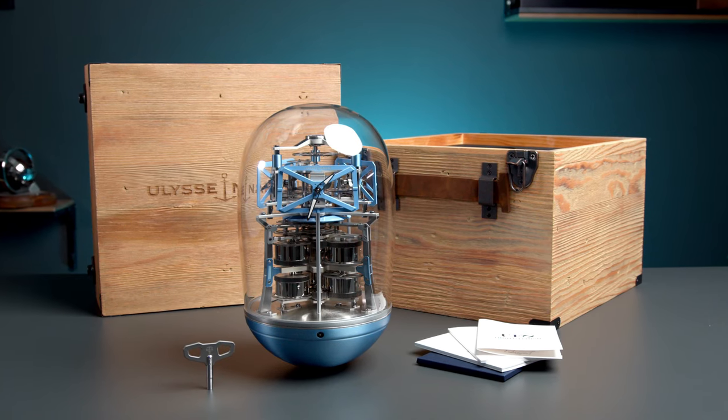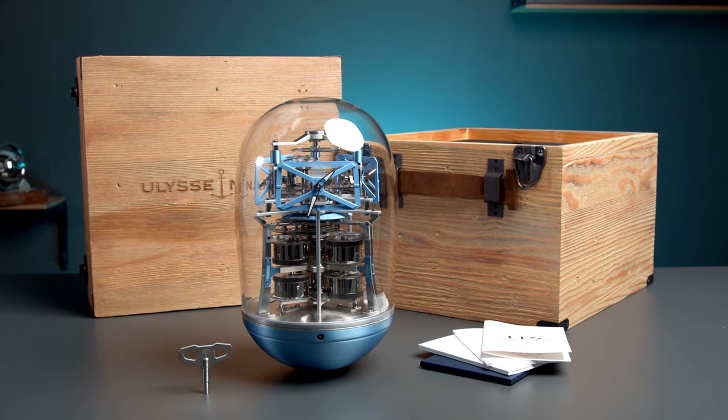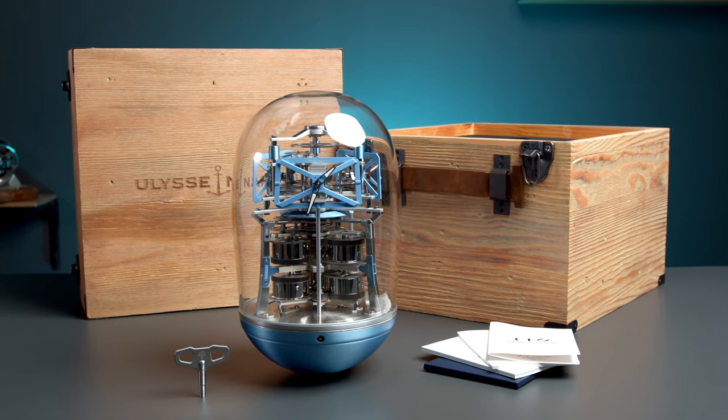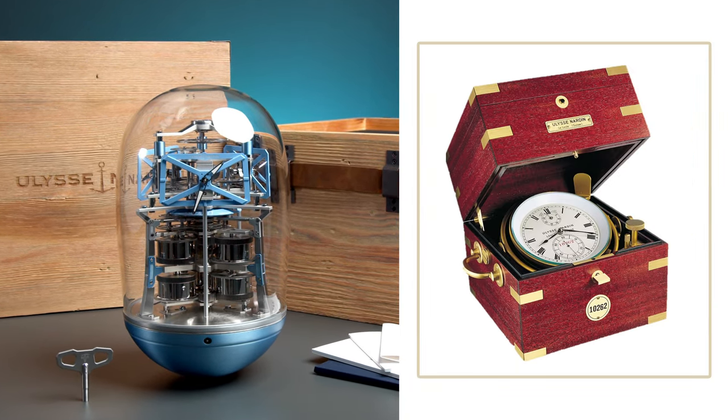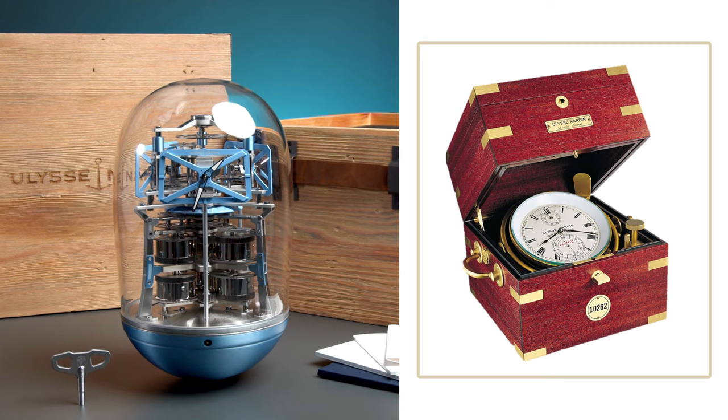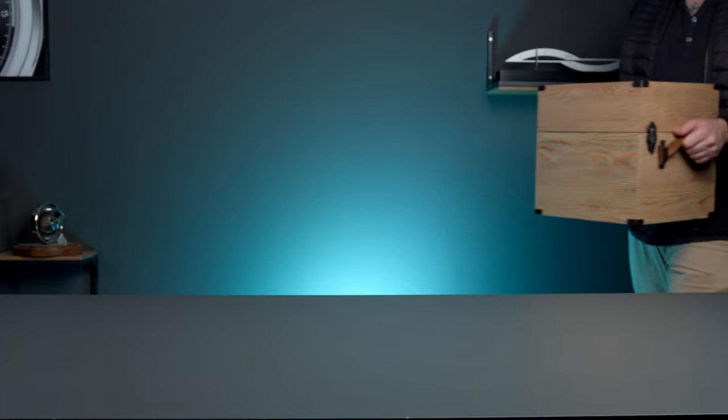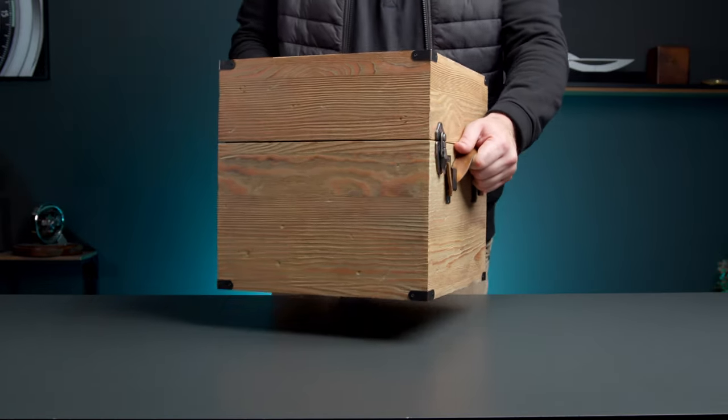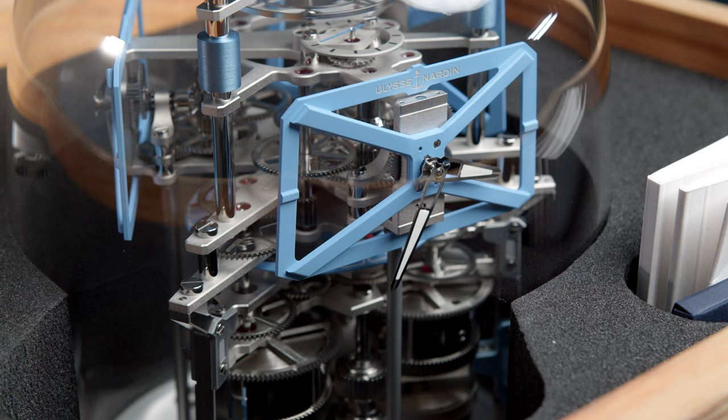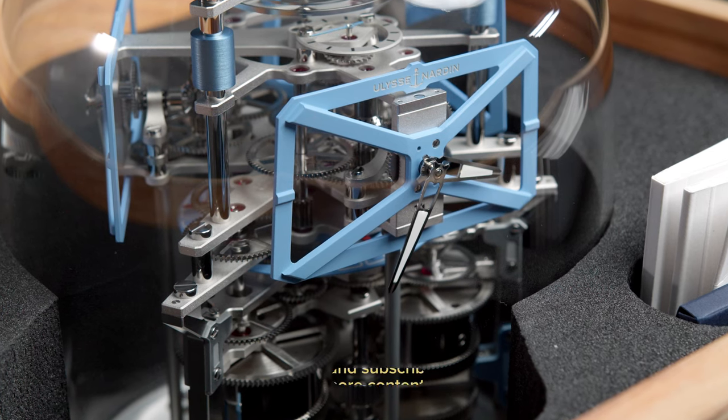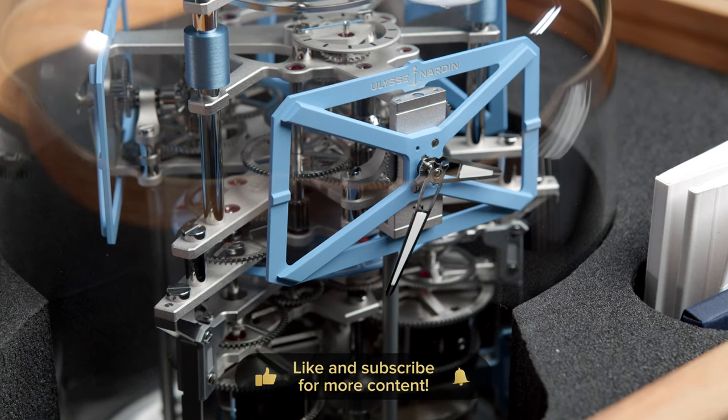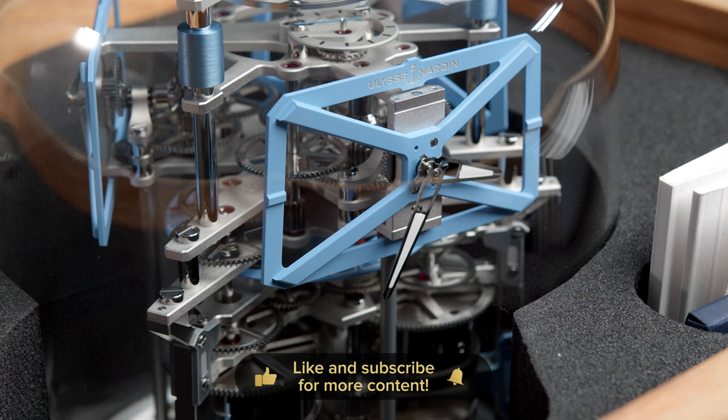This clock is directly linked to Ulysse Nardin's rich history, a company which started back in 1846 with crafting highly accurate marine chronometers. These were used by over 50 navies all over the world, from the end of the 19th century till the 1950s. Back then, everything was analog and these instruments were crucial for navigation. Essentially, a marine chronometer was carried onto the ship in a crate like this one to help navigate the waters. It was used to determine longitude by comparing Greenwich Mean Time and the time at the current location found from observations of celestial bodies and the stars.